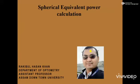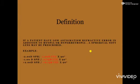Hello everyone, I am Rakibul Hassan Khan. I am going to discuss spherical equivalent power calculation. The definition is: if a patient has low astigmatism refractive error in addition to myopia or hypermetropia, a spherical soft lens may be prescribed. For example: minus two diopter spherical / minus one diopter cylinder × 90°, or minus one diopter spherical / minus 0.75 diopter cylinder × 90°, or plus two diopter spherical / plus 0.75 diopter cylinder × 90°.